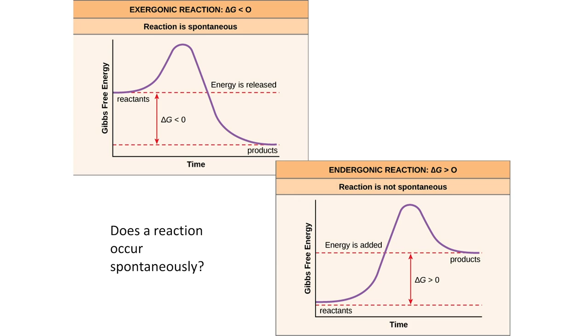And the flip where delta G is positive, where you need energy for the reaction to go, then you see that the amount of energy required is a positive input that has to take place.